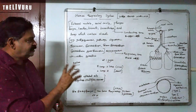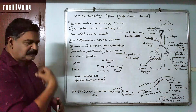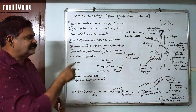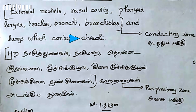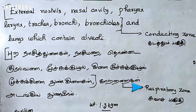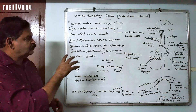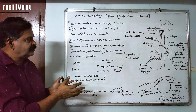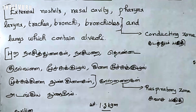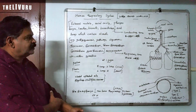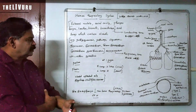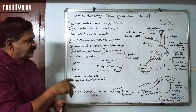The respiratory system of a human being can be classified into two regions: one is the conducting zone and the other one is the respiratory zone. These are the two regions — conducting zone (Kadahtum Pavudhi) and respiratory zone (Sposa Pavudhi).